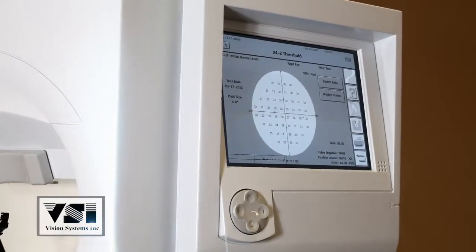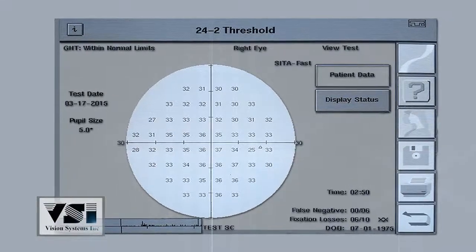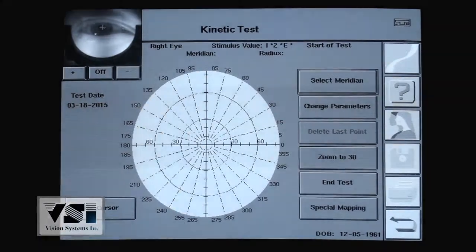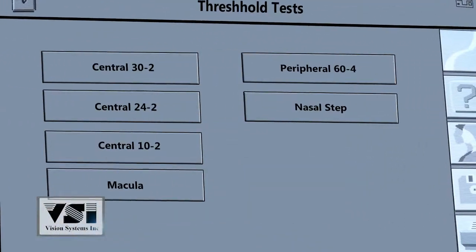Along with foveal threshold testing, the 740 offers an extensive library of testing strategies including the macula and nasal step tests.